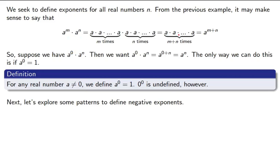We want this rule to hold. That if you add your exponents, it'll hold no matter what. So, a to the 0 times a to the n, we want it to be a to the 0 plus n. But, 0 plus n is just n. So, let's compare these two. The only way this could happen is if a to the 0 is 1. So, as long as a is not equal to 0, we define a to the 0 to equal 1.